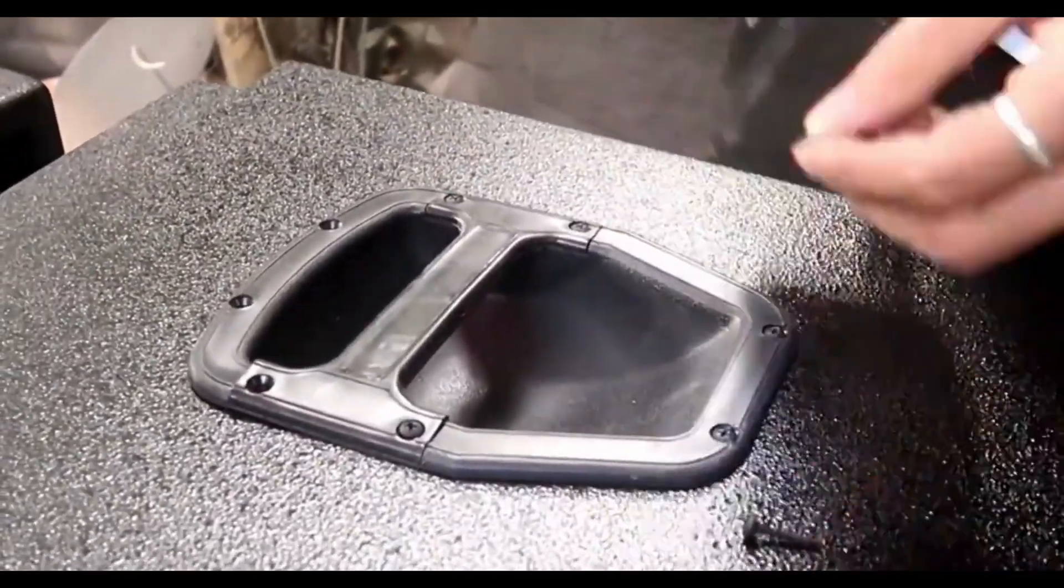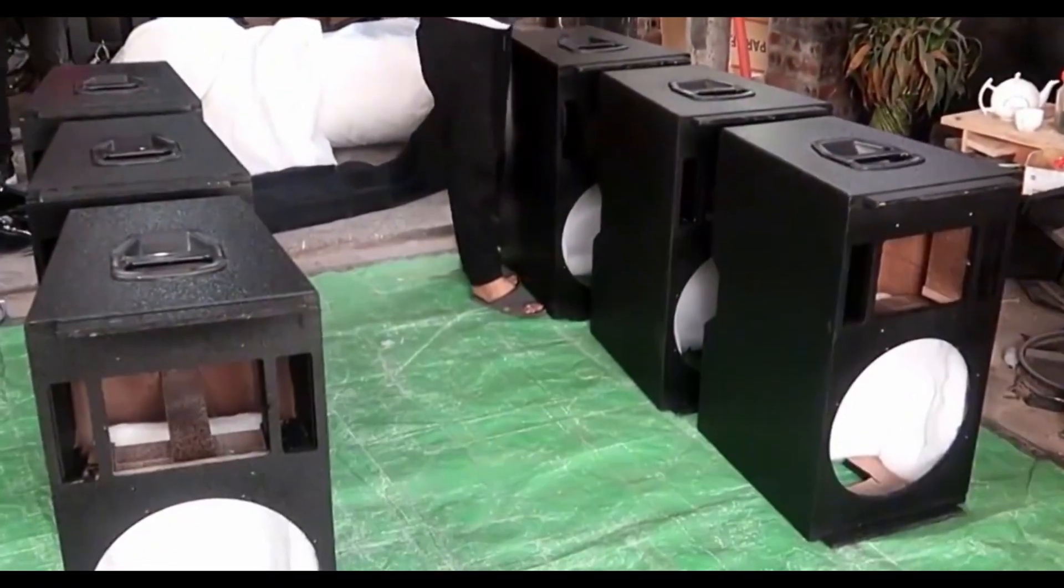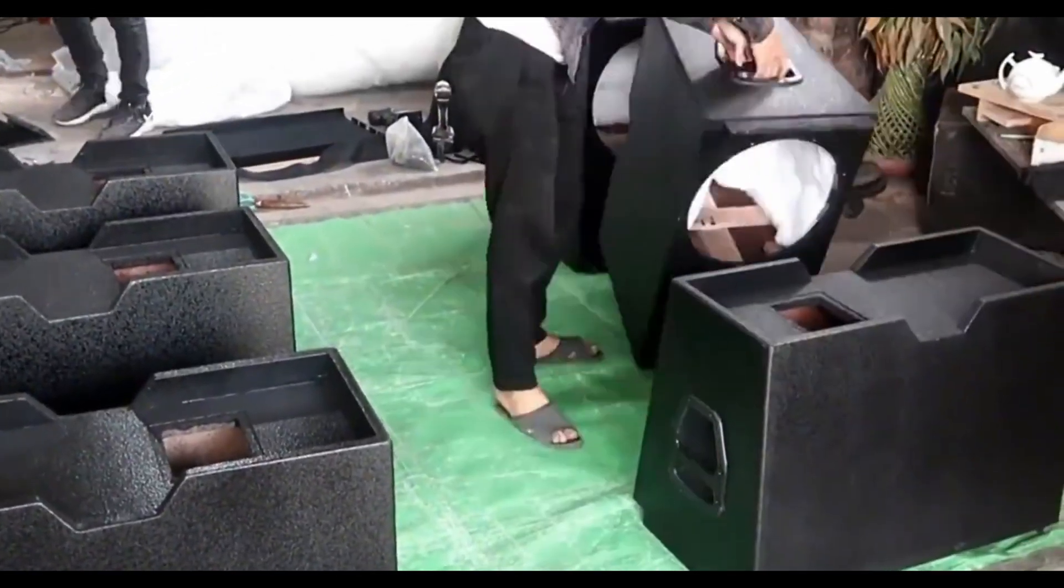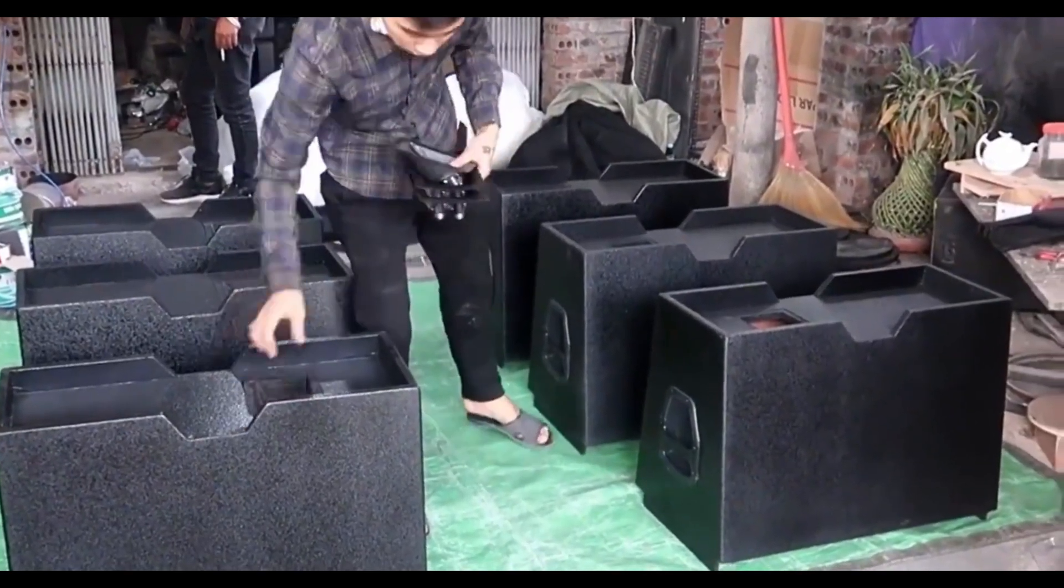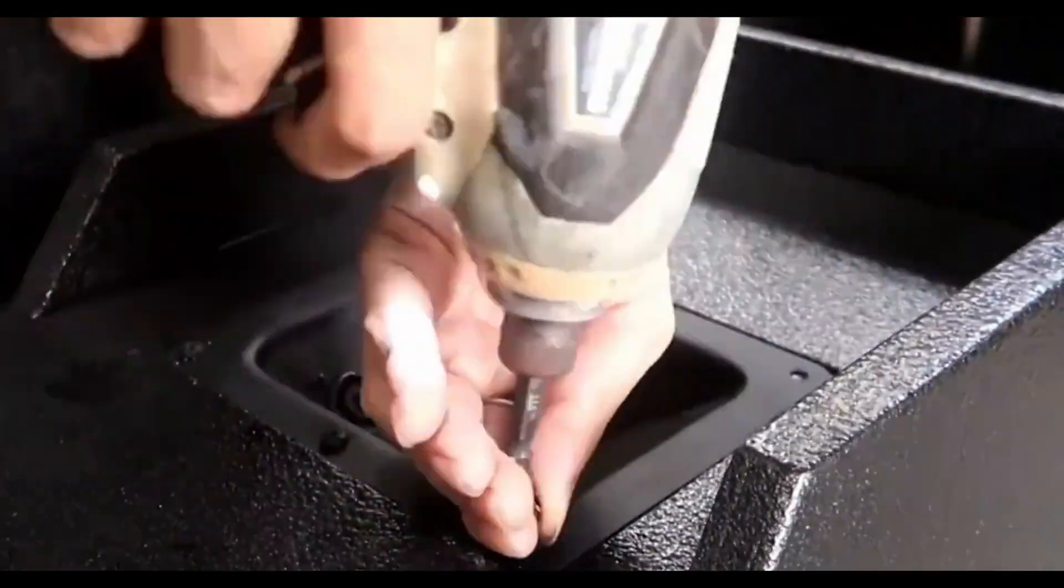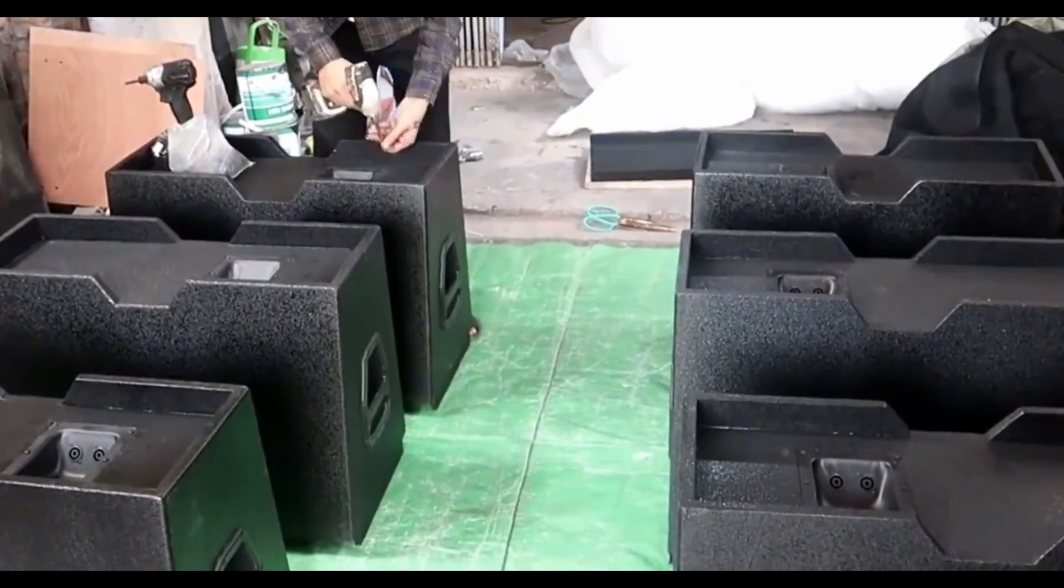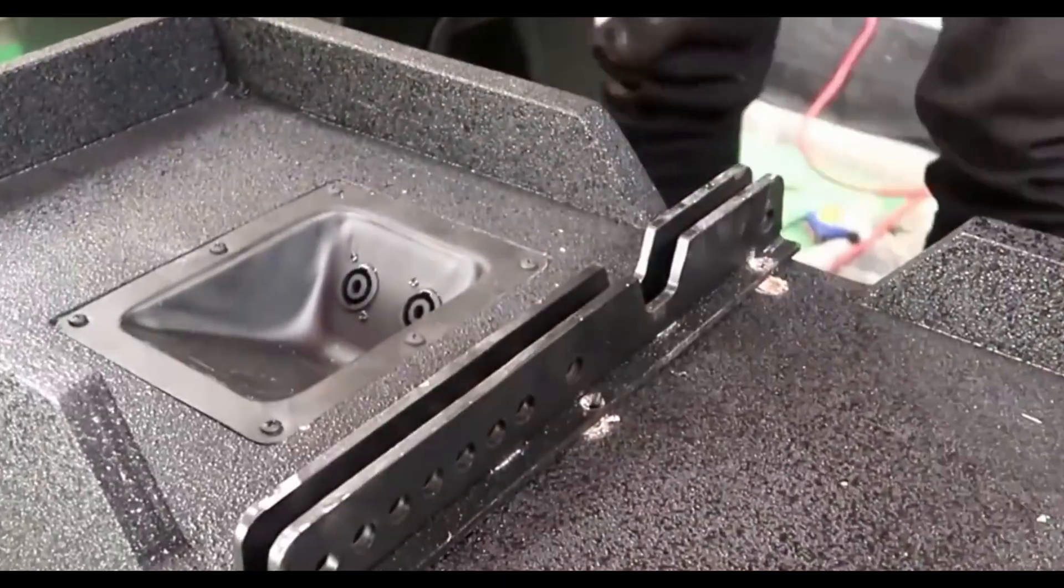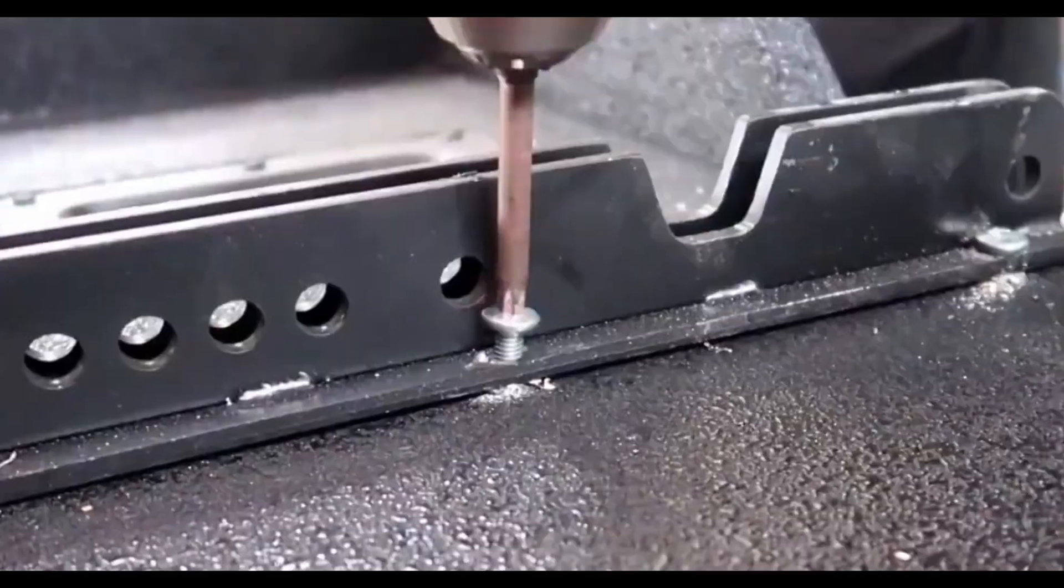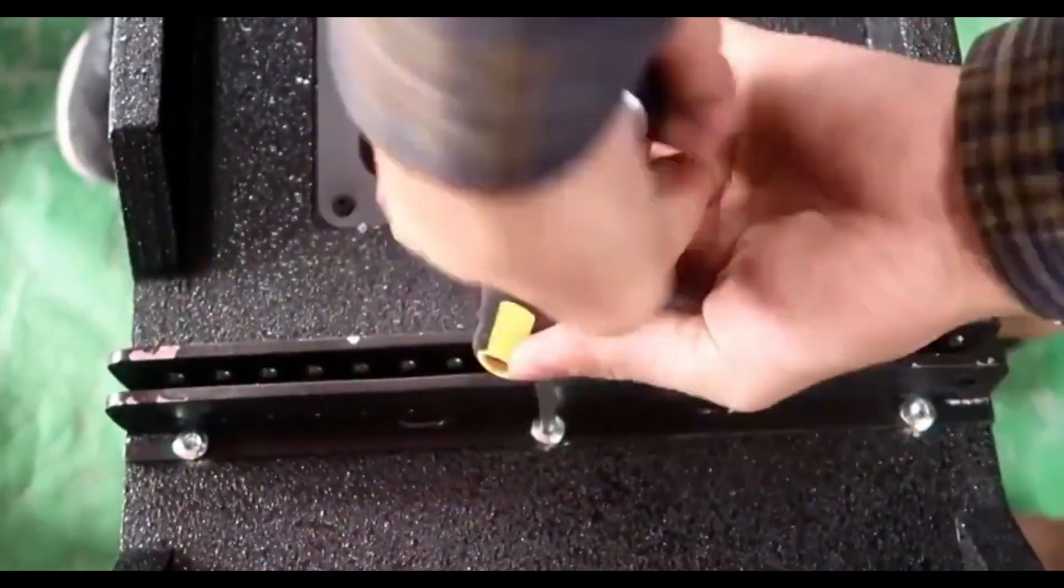User evaluation and professional evaluation: Before buying audio equipment, check out some user reviews and professional reviews. Learn about other users' experiences and expert reviews, which is very helpful in your decision-making. Companion equipment: Sound systems often need to be used in conjunction with other equipment, such as amplifiers, audio processors, audio cables, etc. Make sure the audio equipment you choose is compatible with other supporting equipment and work together to achieve the best possible sound.